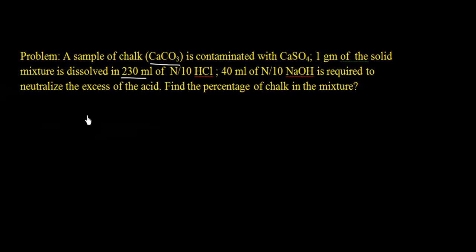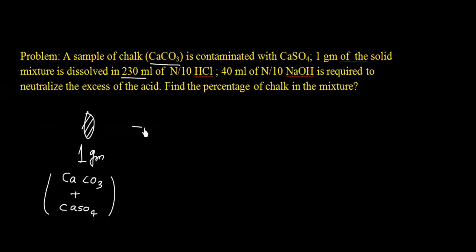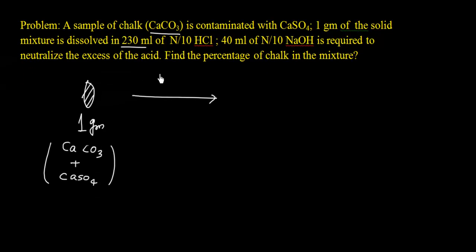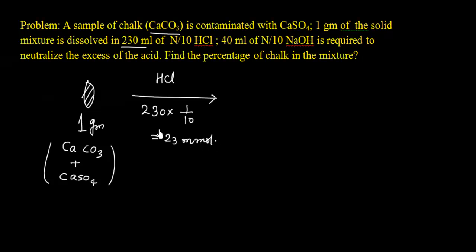Let us set up the diagram. We have a 1 gram mixture sample containing CaCO3 plus CaSO4. When we add this sample to HCl, the moles of HCl taken are 230 × (1/10) = 23 millimoles. Since HCl has N-factor 1, normality and molarity are the same. So HCl initially taken is 23 millimoles.